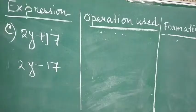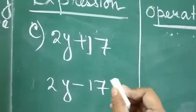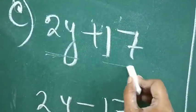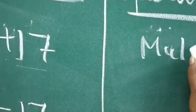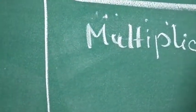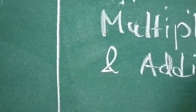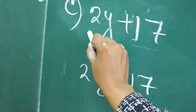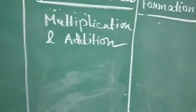Now, let's come to the next part. Here, 2 operations have been used. See, here, 2 is multiplied by y and then 17 is added. So, here, multiplication and addition are the operations. And how it is formed? First, y is multiplied by 2 and then 17 is added.